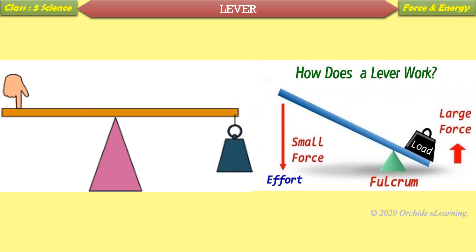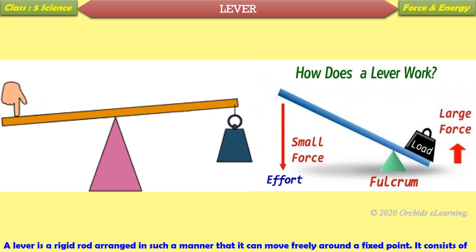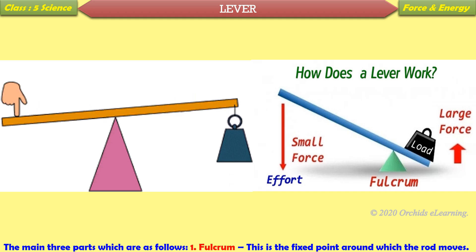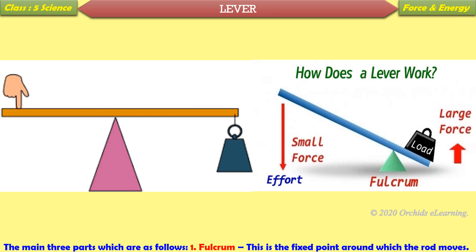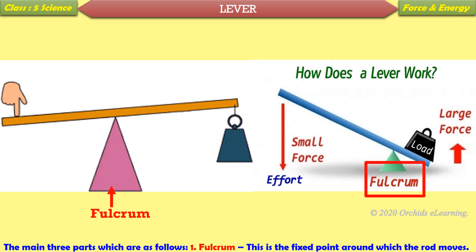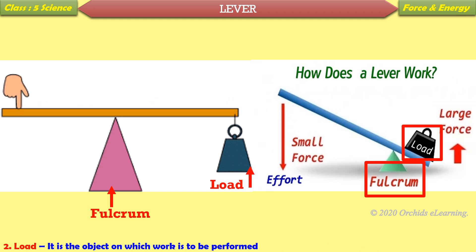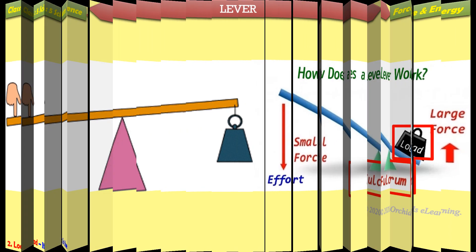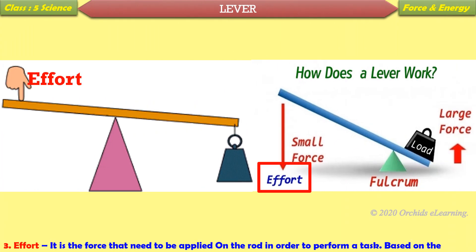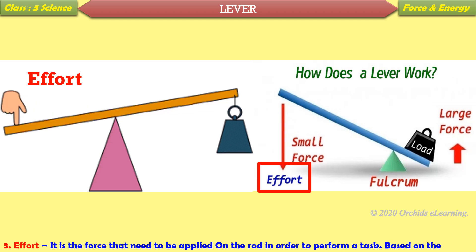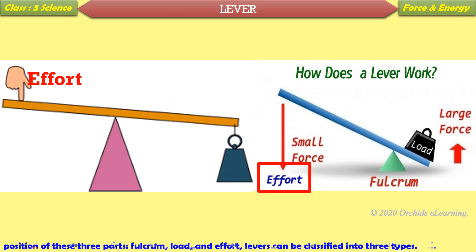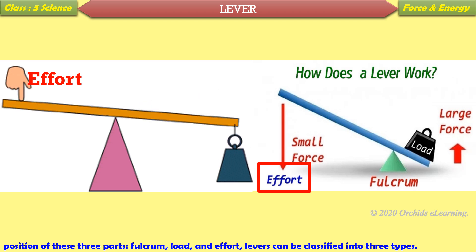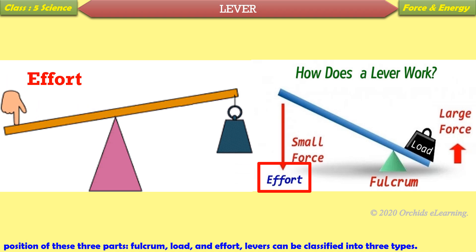Lever: A lever is a rigid rod arranged so that it can move freely around a fixed point. It consists of three main parts: fulcrum — the fixed point around which the rod moves; load — the object on which work is to be performed; and effort — the force that needs to be applied to the rod to perform a task. Based on the position of these three parts, levers can be classified into three types.